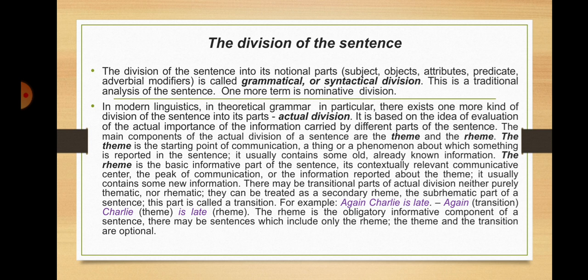Now we'll discuss the division of the sentence. The division of the sentence into its notional parts — subjects, objects, attributes, predicates, verbal modifiers — is called grammatical or syntactical division. This is the traditional analysis of the sentence, also called nominative division. In modern linguistics and theoretical grammar in particular, there exists one more kind of division: actual division, based on the evaluation of the actual importance of the information carried by different parts of the sentence. The main components of actual division are the theme and the rheme.